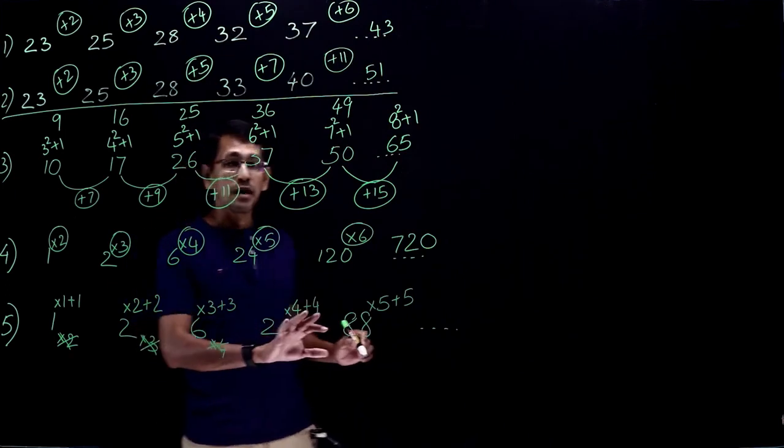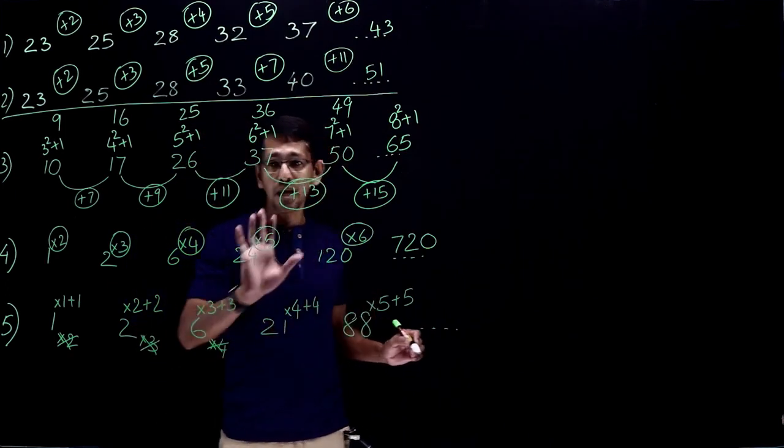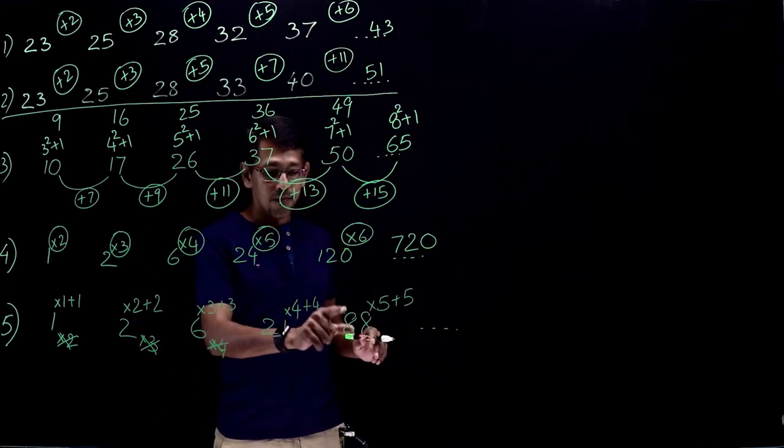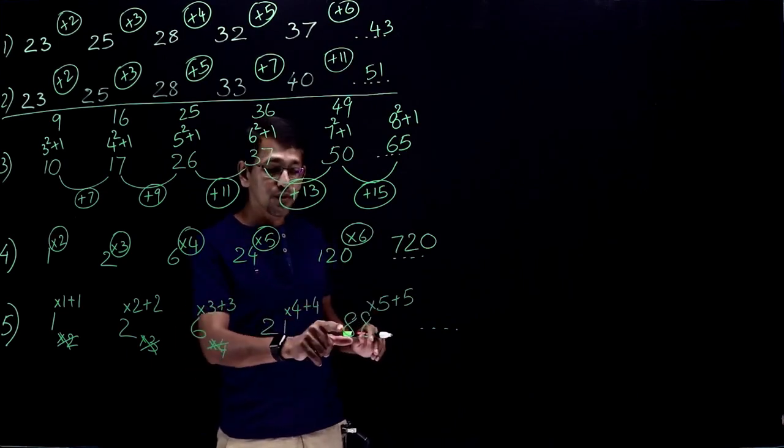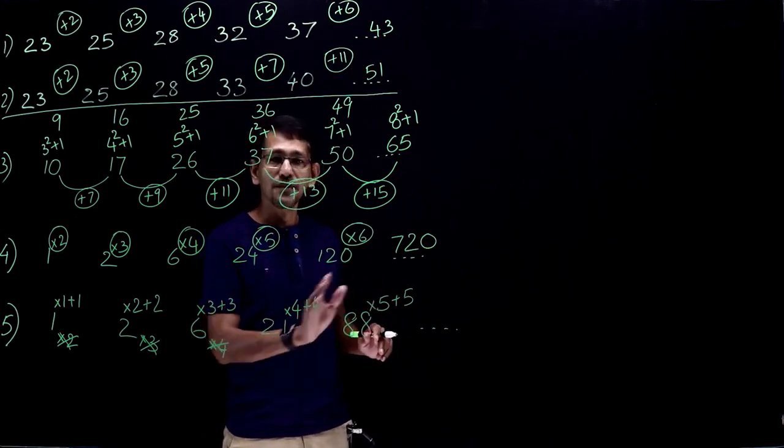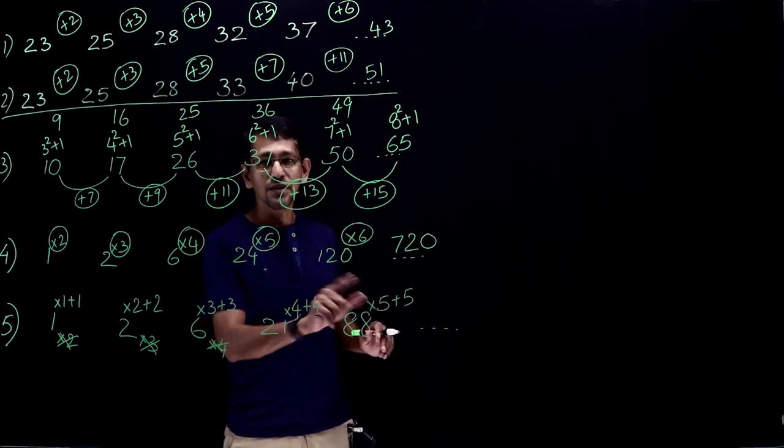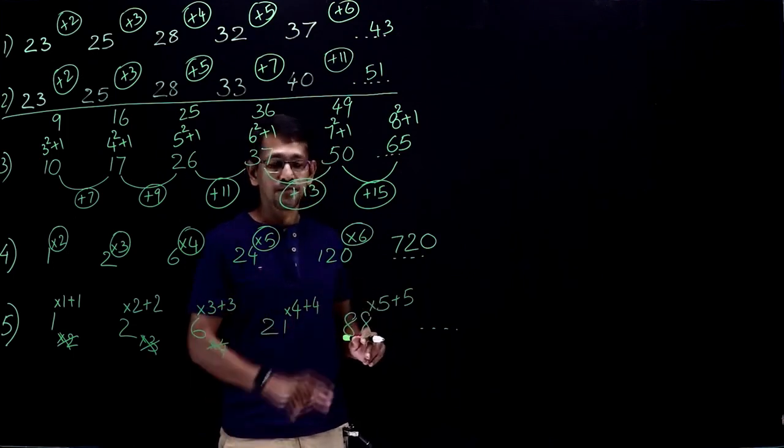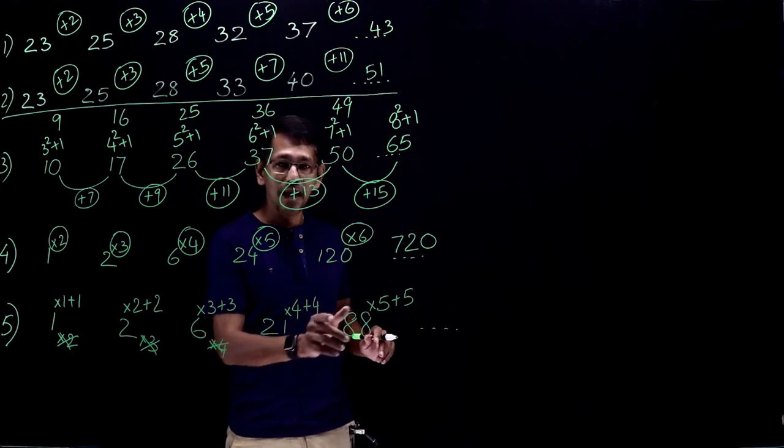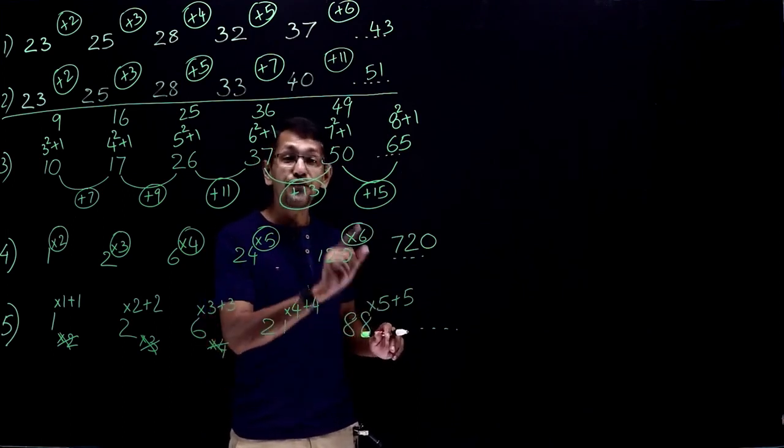So how do we multiply? Without paper, without pencil, just your brain. So 88 into 5. So what we do is 80 into 5, 400. The balance is 8, 8 into 5 is 40, so 440.